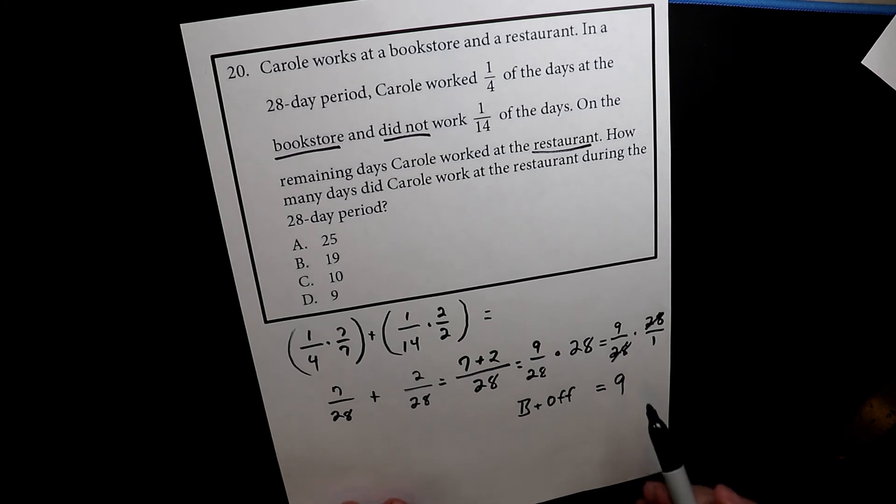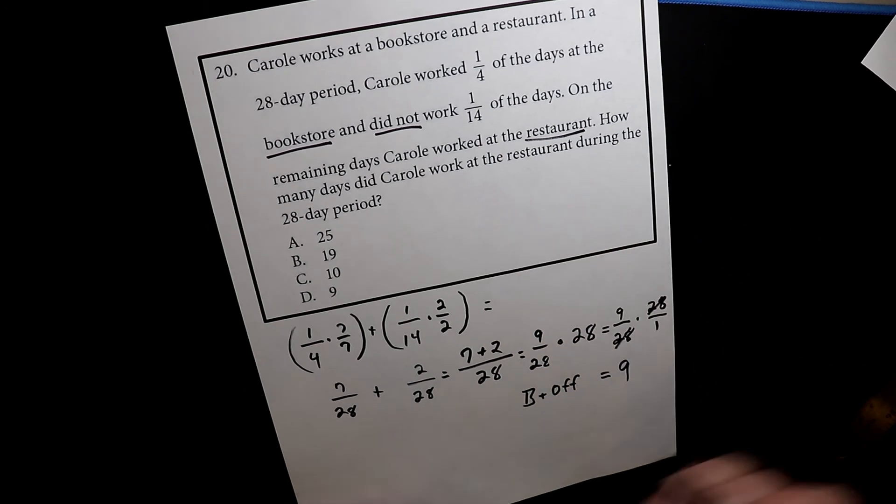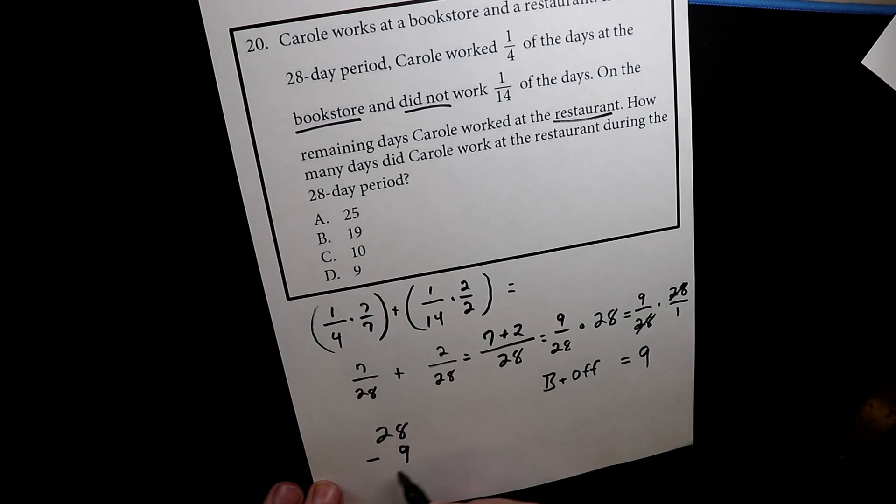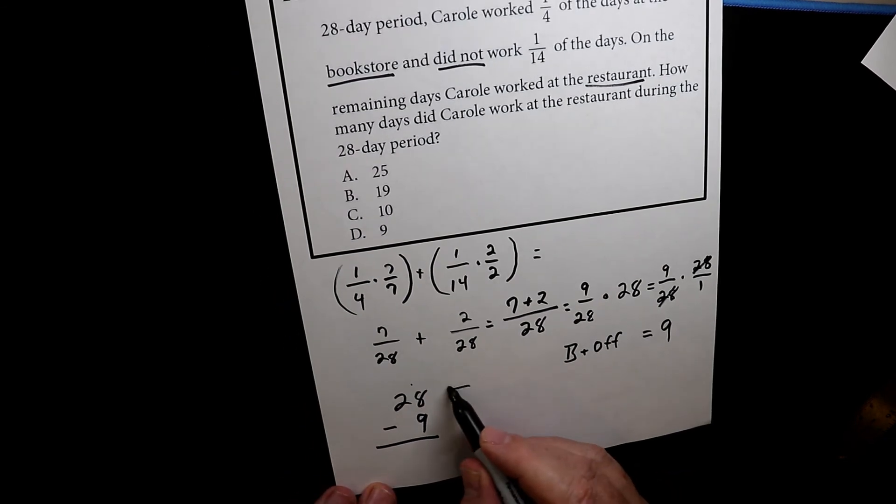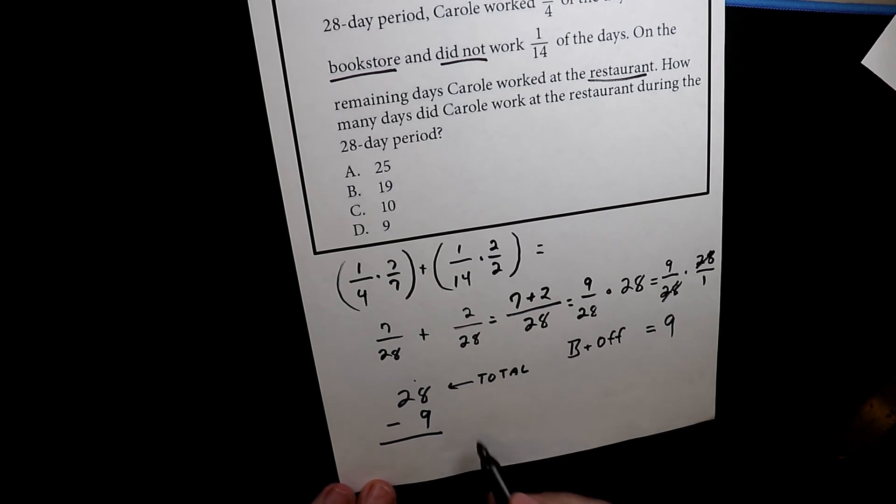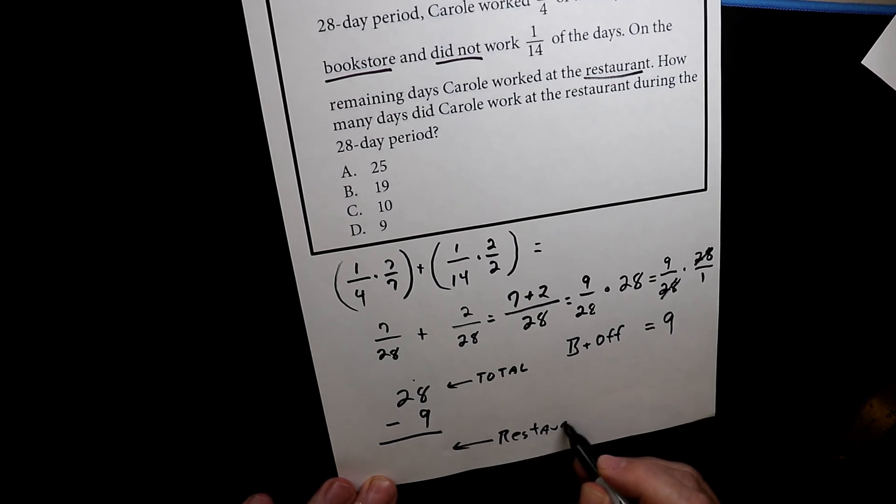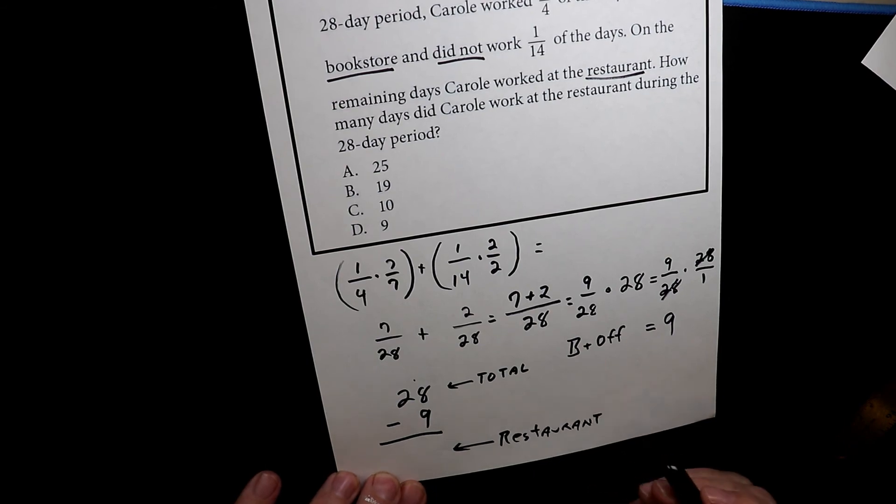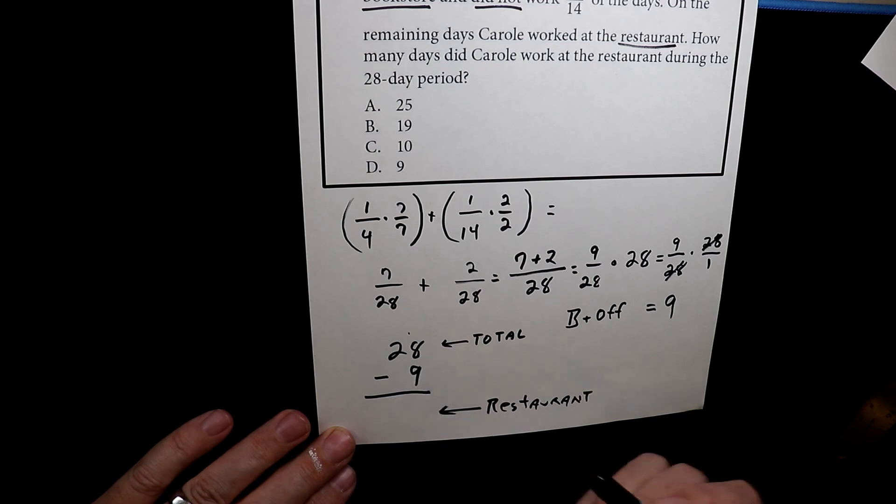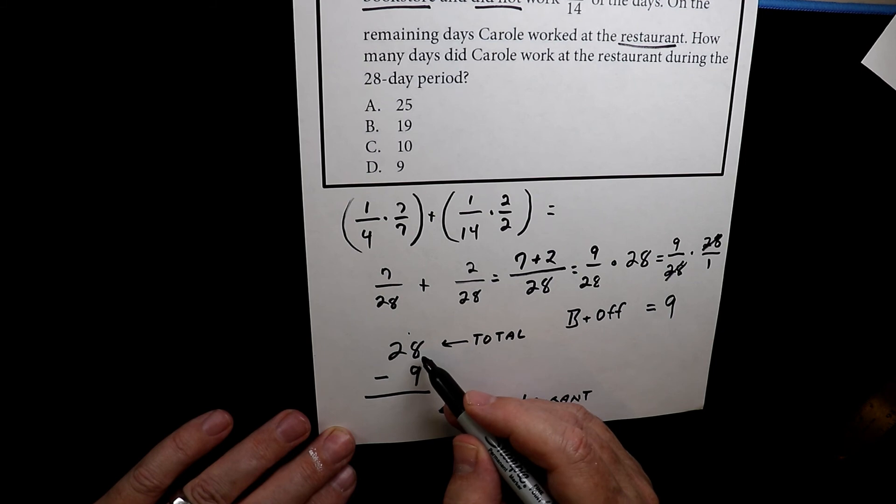All we have to do now is we just have those nine days, and we can subtract that from 28 to find the restaurant. So the total days is 28. I'm going to subtract the nine from it. This is total days. And we just have to figure out the restaurant time now. So all we're going to do is we're going to take the 28, we're going to subtract nine from it to get our final answer. So 28 minus nine is 19.